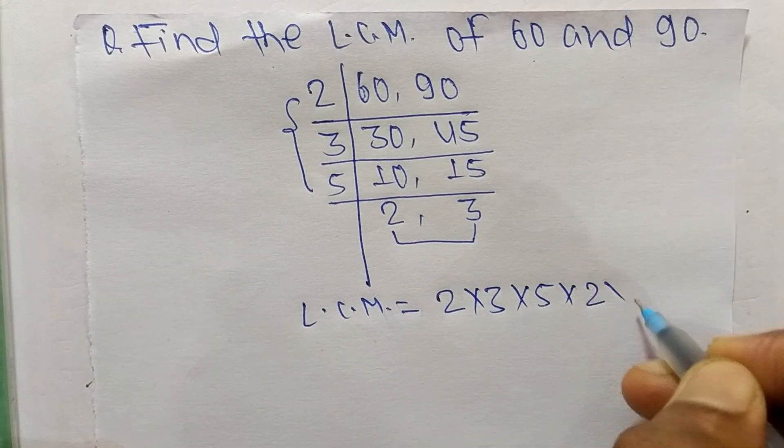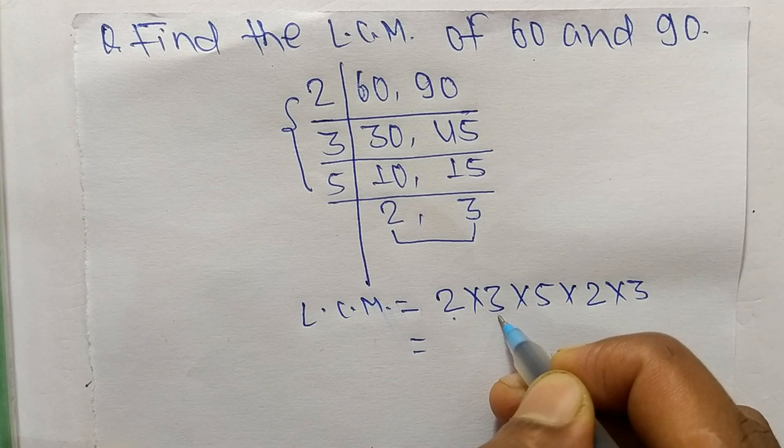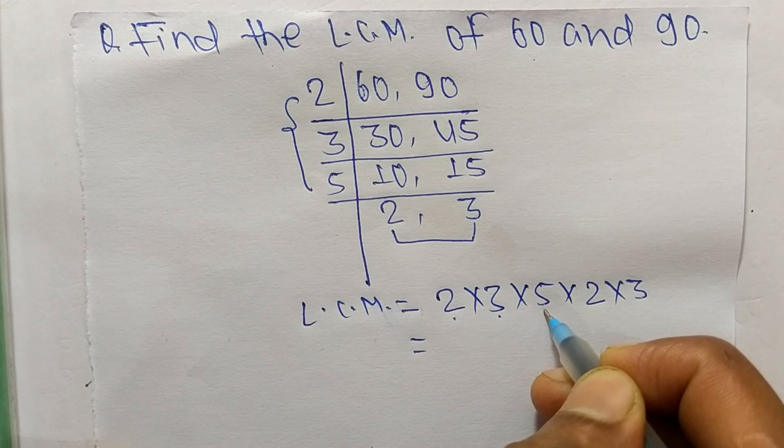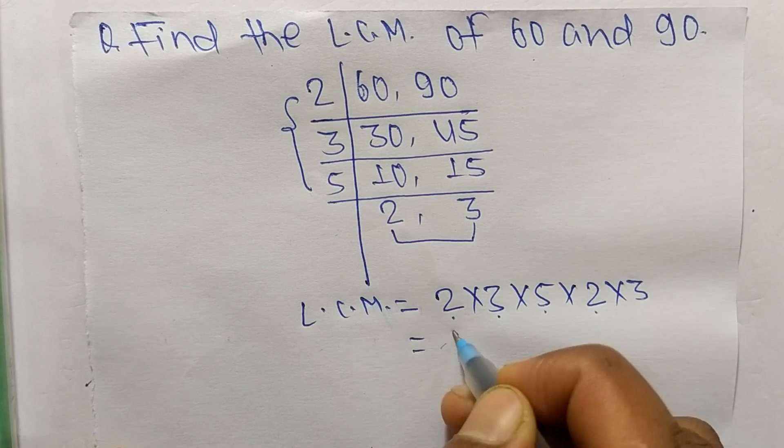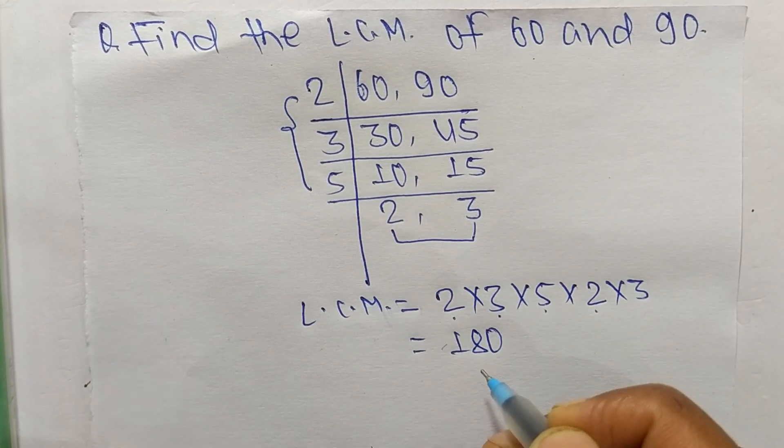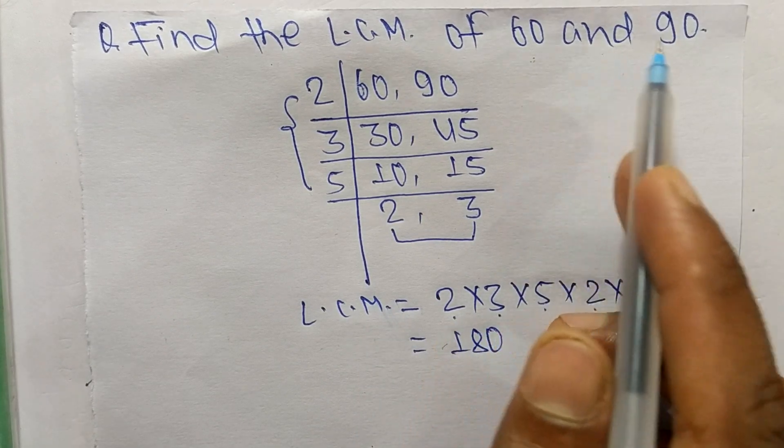So 2 times 3 means 6, 6 times 5 means 30, 30 times 2 means 60, 60 times 3 means 180. So 180 is the LCM of 60 and 90.